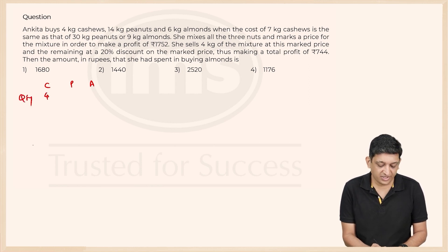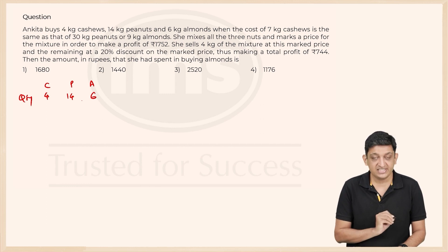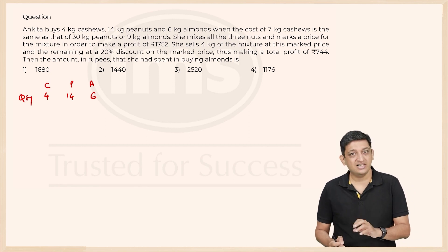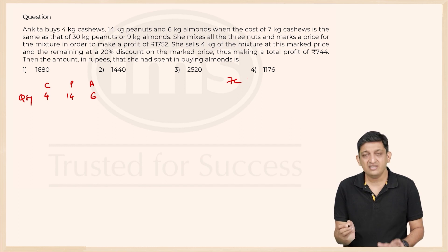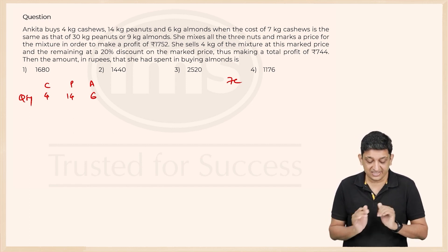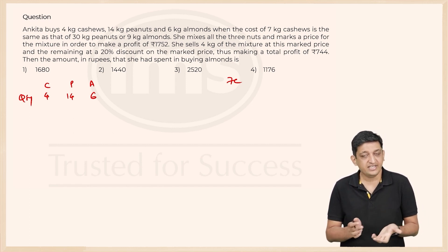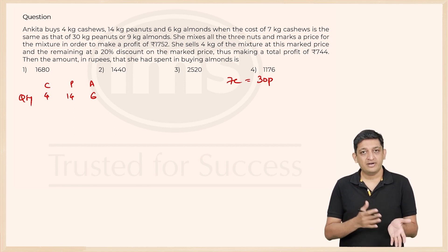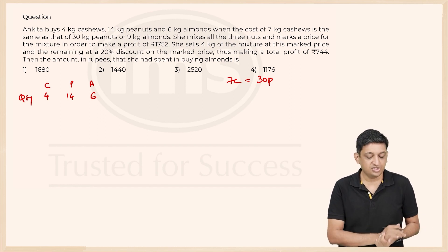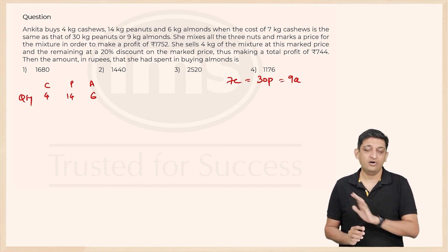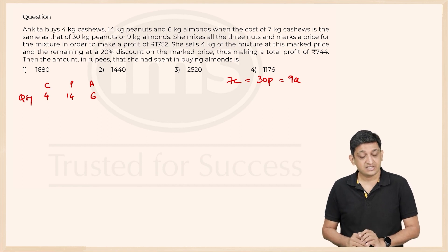So 4 kg cashews, I will write quantity here, 14 kg peanuts and 6 kg almonds. Now she is buying it at some cost price. What is the cost price? It has not been given to us directly. We have been told that the cost of 7 kg of cashews, so when C is the cost price of each kg of cashews, let us say, then 7C will be the total amount spent on 7 kg cashews. This is basically what is consistent.